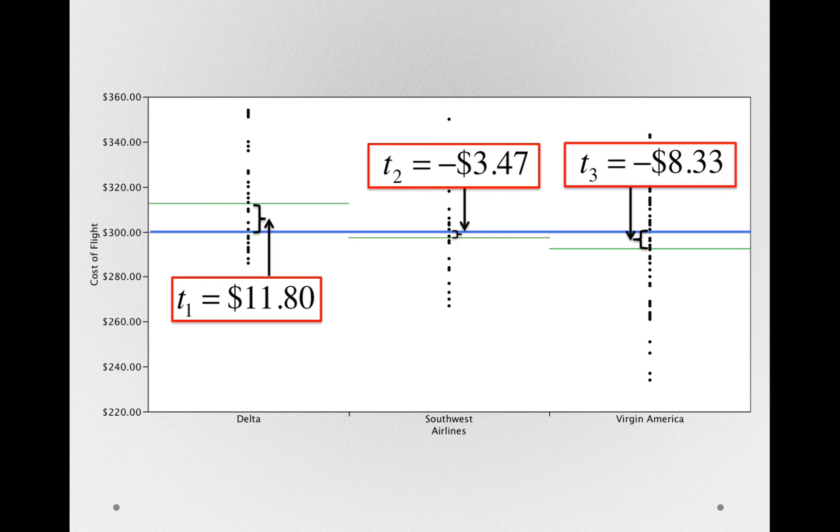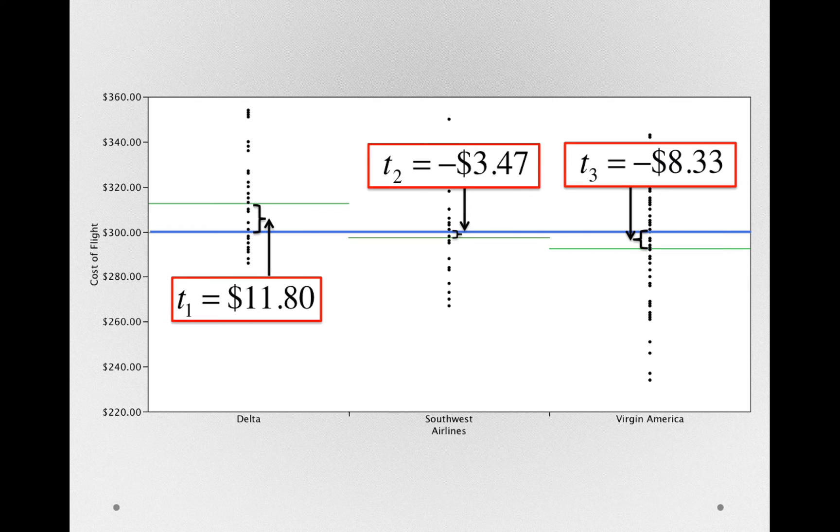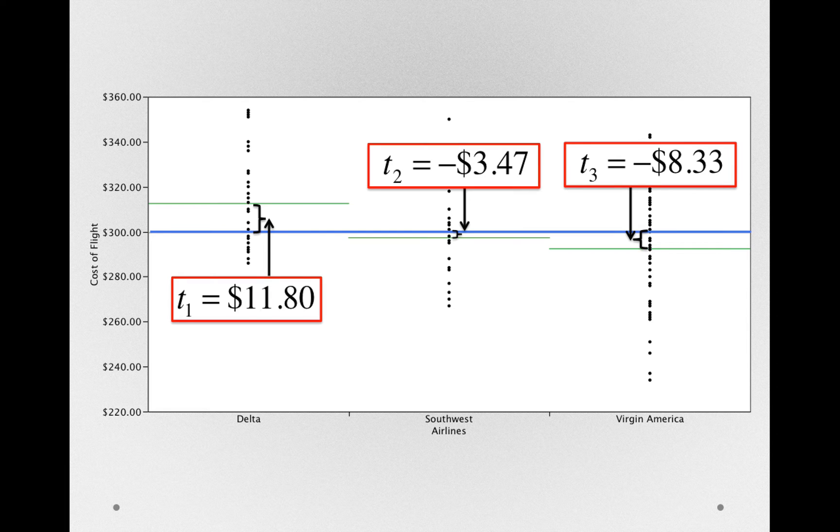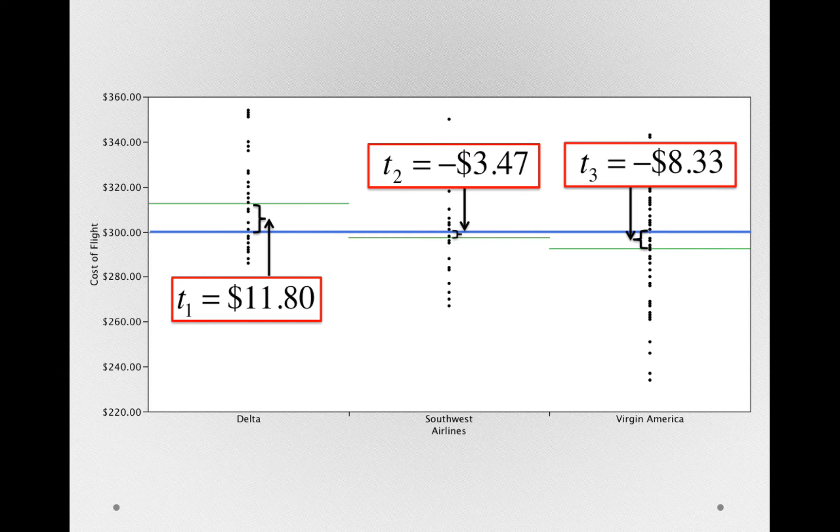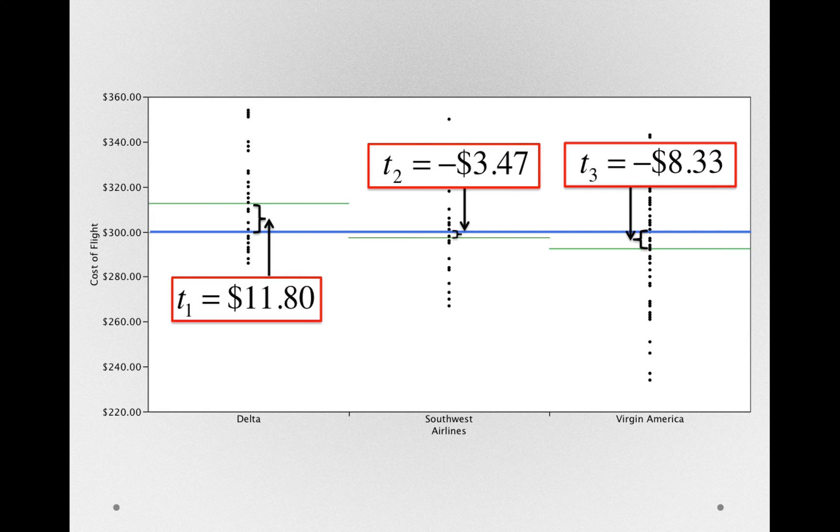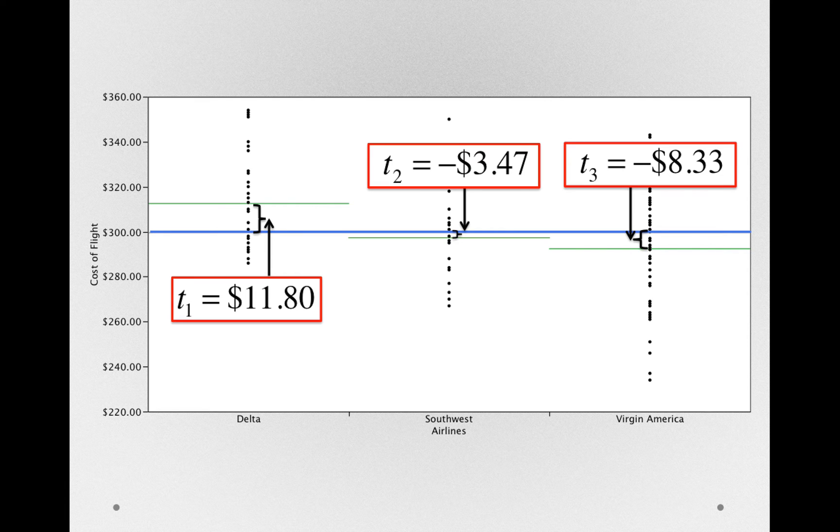Remember, whenever we take a sample and calculate a mean, the mean of that sample will not be identical to the population mean. In this case, we're taking a difference between a sample mean and the grand mean. Each of those are estimates of the population mean for each group and the population grand mean. So each of these treatment offsets is still a sample statistic and still will incur sampling error. Our goal here is to know whether these t sub j's, whether they're actually there in the population. And to do that, we're going to be comparing, like we always do, our treatment or our sample estimates against some benchmark for error.